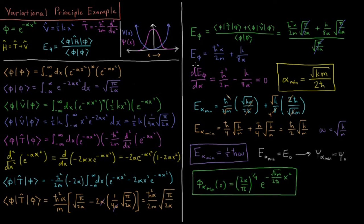We choose alpha to minimize the energy of the trial wave function. Differentiating the energy with respect to alpha and setting it to zero: d(E_phi)/d(alpha) = h-bar squared over 2m minus k over 8 alpha squared = 0. Solving for alpha, we find alpha_min — the value that minimizes the energy — equals the square root of k times m divided by 2 h-bar.